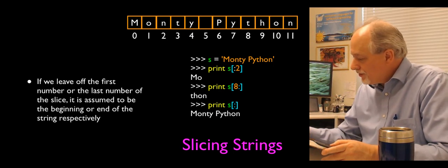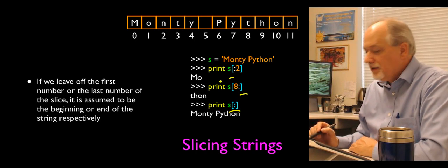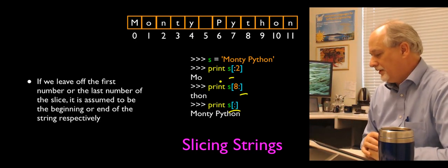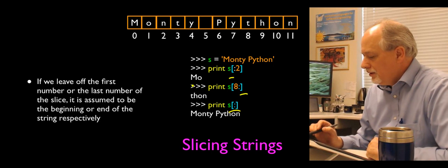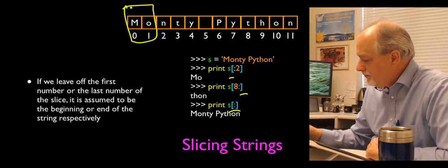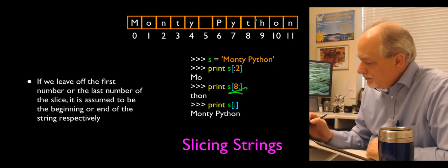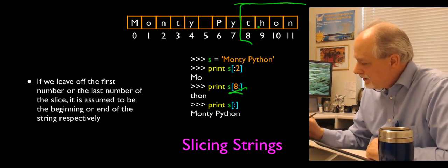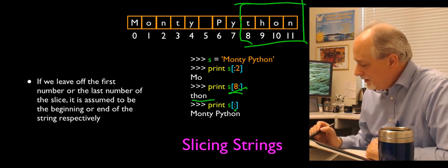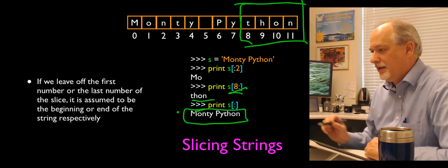If we leave off the first or the last number — or both — they mean the beginning and end of the string respectively. Up to but not including 2 gives 'Mo'. Starting at 8 to the end gives 'thon'. And leaving both off gives the whole string, 'Monty Python'.